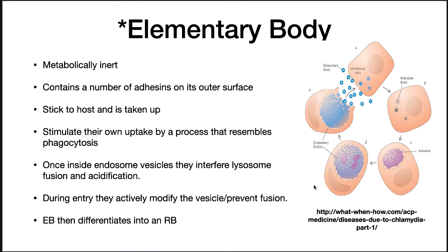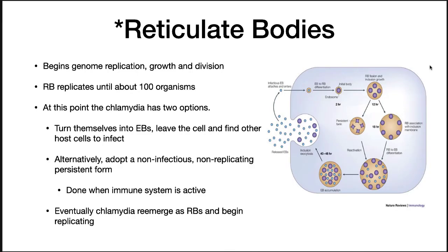The EB then differentiates into a reticulate body (RB). The reticulate bodies begin genome replication, growth, and division inside the endosome. The RB will replicate until there are about 100 organisms. At this point, chlamydia has two options: they can turn themselves into EBs, leave the cell, and find other hosts to infect; or alternatively, they can adopt a non-infectious, non-replicating persistent form.